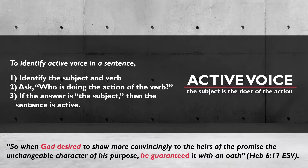First, let's identify the subjects and verbs in the sentence. God is the subject and desired is the verb in the subordinate clause, and he is the subject and guaranteed is the verb in the main clause. Second, we ask who is doing the action of the verbs — God is doing the first action, and he is doing the second. So the subject in each clause is performing the action. Step three tells us that if the answer is the subject, then the sentence is in active voice — so our sample sentence is in active voice in both clauses.